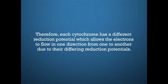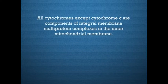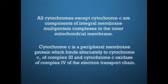Because a heme ring in the cytochromes consists of alternating double and single bonded atoms, a large number of resonance hybrid forms exist. These allow the extra electron delivered to the cytochrome to be delocalized throughout the heme carbon and nitrogen atoms as well as the ferrous ion. Each cytochrome has a different reduction potential, which allows electrons to flow in one direction from one to another. All cytochromes except cytochrome C are components of integral membrane multiprotein complexes in the inner mitochondrial membrane. Cytochrome C is a peripheral membrane protein which binds alternately to cytochrome C1 of complex 3 and cytochrome C oxidase of complex 4 of the electron transport chain.